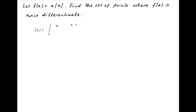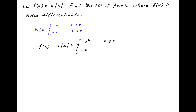Modulus of x is equal to x where x is greater than 0, and is equal to minus x when x is negative. Therefore, f(x) which is equal to x times modulus of x is equal to x squared when x is greater than or equal to 0, and is equal to minus x squared when x is less than 0.